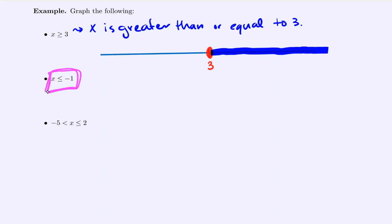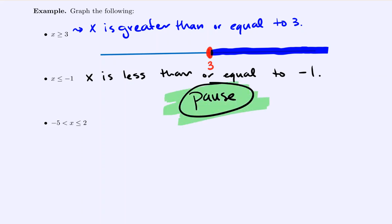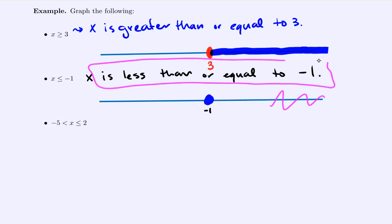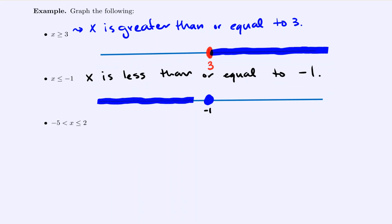Take a moment to say this next one out loud. We'd agree x should be less than or equal to negative one. Pause the video and attempt to draw your own number line, then unpause to check your work. We draw our number line and mark negative one. It's 'or equal to,' so we do a solid circle immediately. That splits the diagram into pieces: before negative one and greater than negative one. Since we want less than or equal to, we shade the section that comes before negative one.